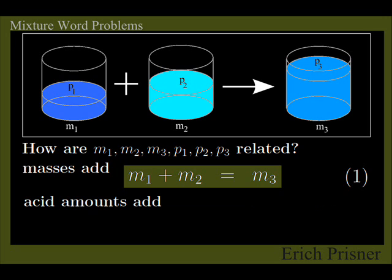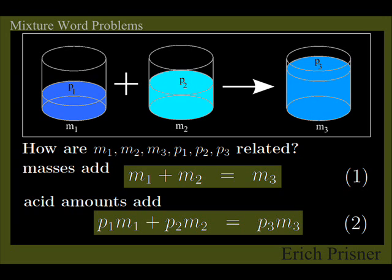For the concentration, using the same argument as above, we know that the amount of pure acid in the two containers are P1 times M1, respectively P2 times M2, and the amount of pure acid in the resulting solution equals P3 times M3. Thus we get the equation P1 times M1 plus P2 times M2 equals P3 times M3, our second equation.